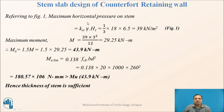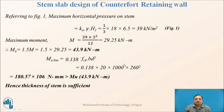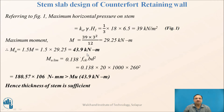We have to find the maximum horizontal pressure on the stem slab. Maximum horizontal pressure is K × γ × H1, which gives 39 kN/m². The bending moment M is WL²/12 because the stem slab is a continuous slab resting on the counterforts, giving M = 29.25 kN·m. The design moment MU = 1.5 × M = 43.9 kN·m.